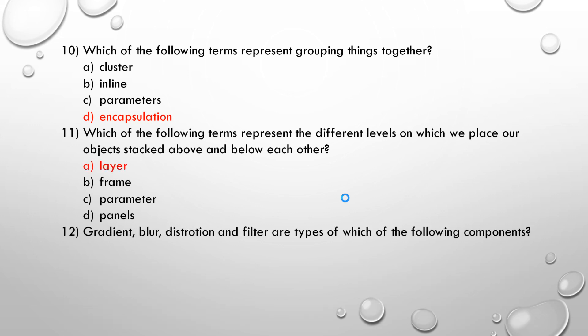And the last question for today's lecture is question number 12. Gradient, Blur, Distortion, and filter are types of which of the following component? A. Frames. B. Layer. C. Keyframe. D. Panel. And the correct answer is layer.